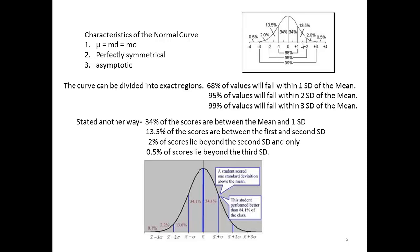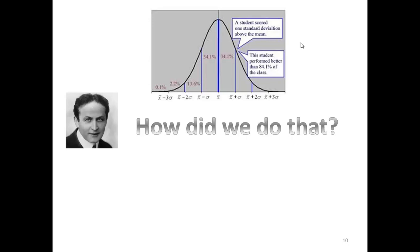So look at this chart. What can this tell us? A student scored one standard deviation above the mean. That means that this student performed better than 84% of the class. How did we do that?